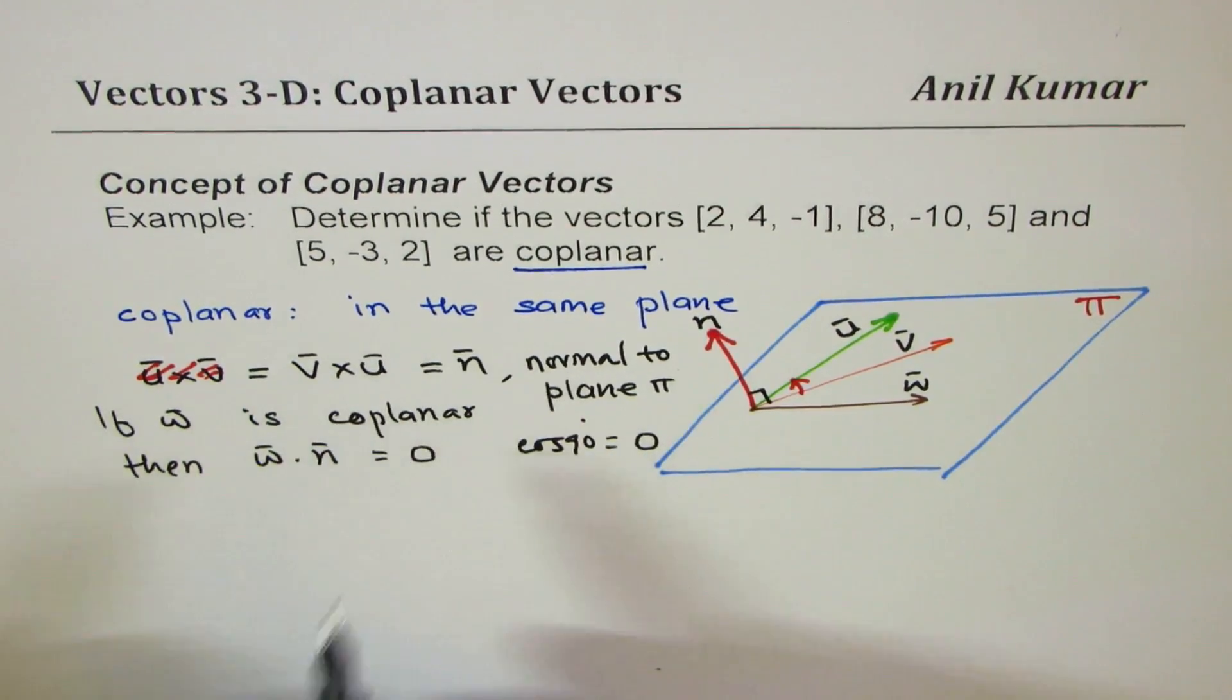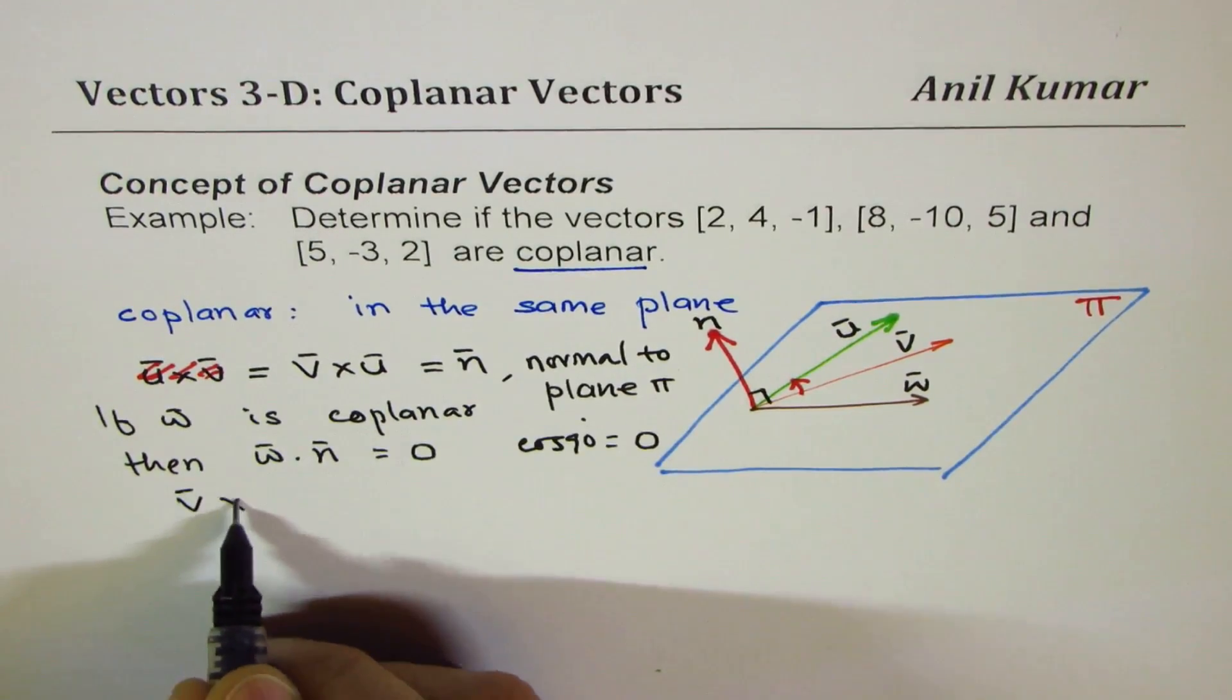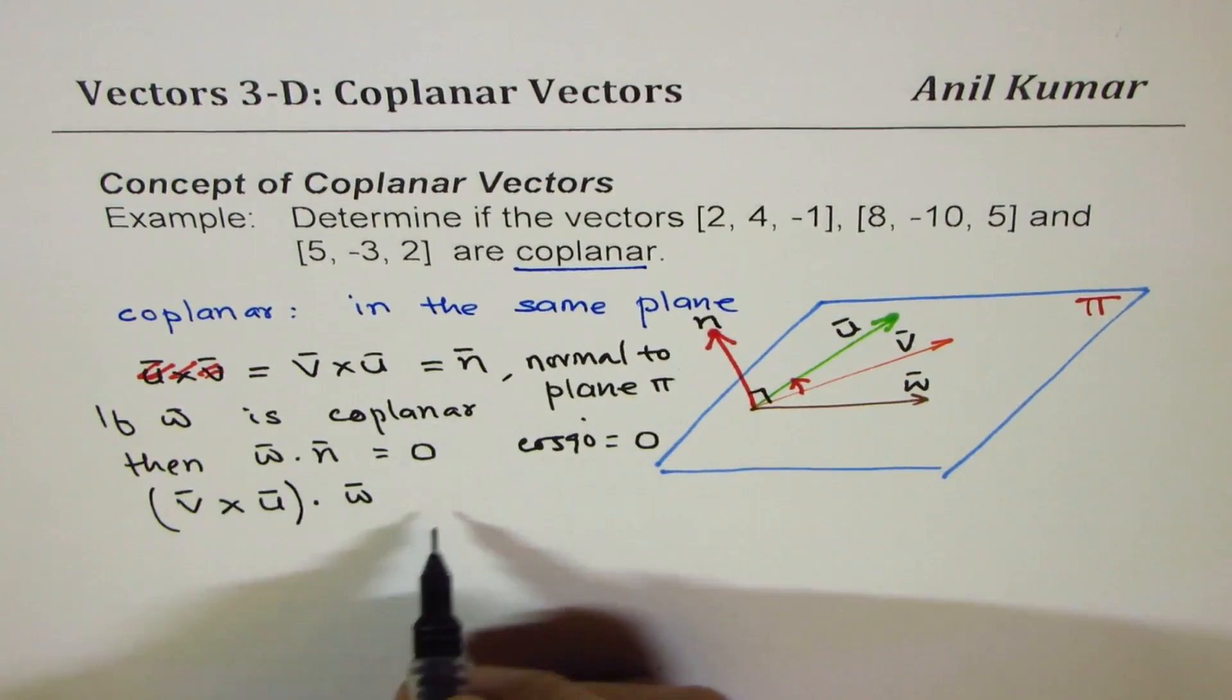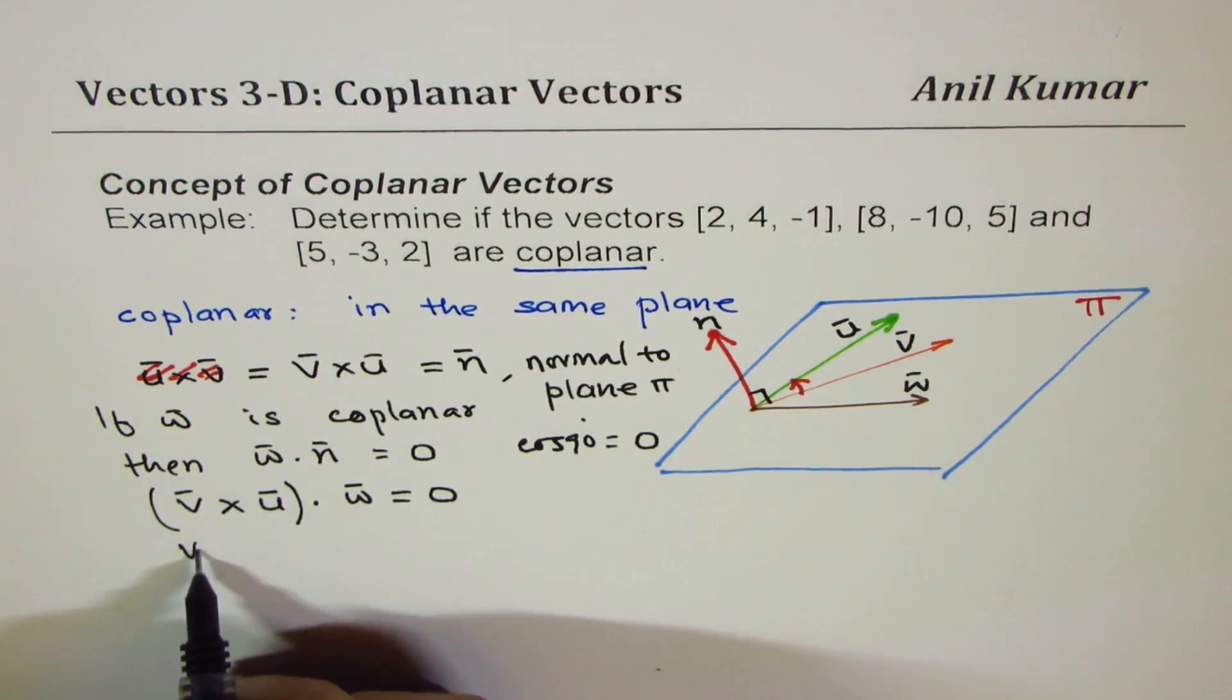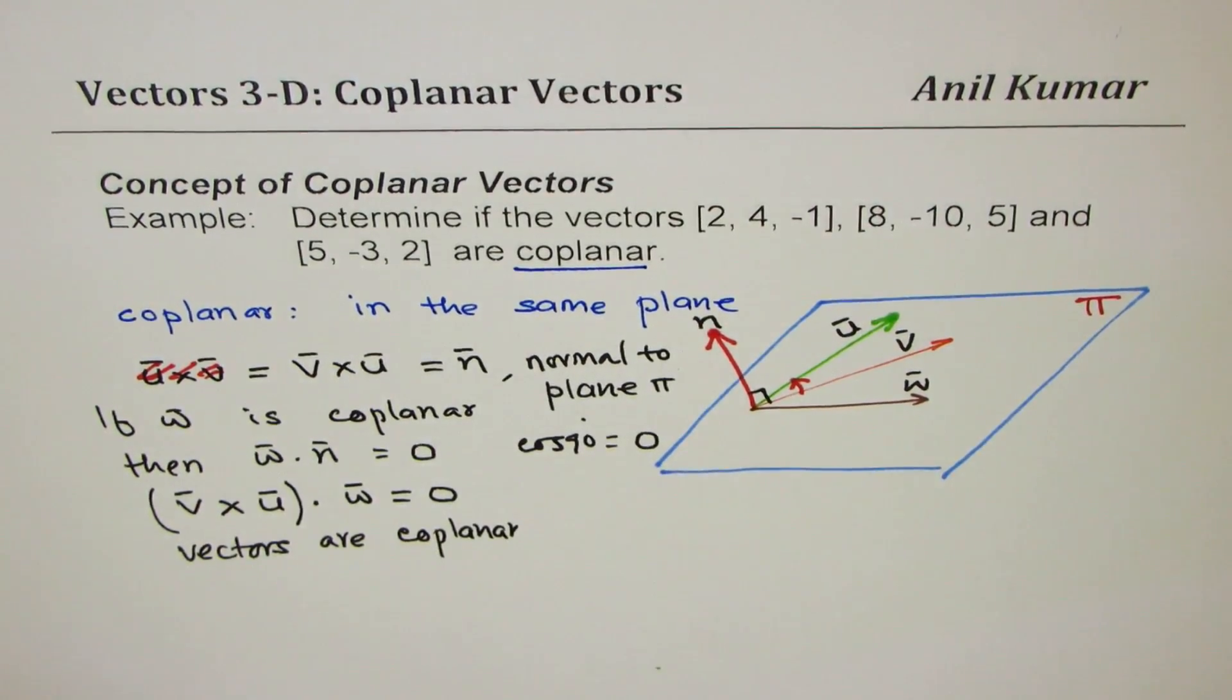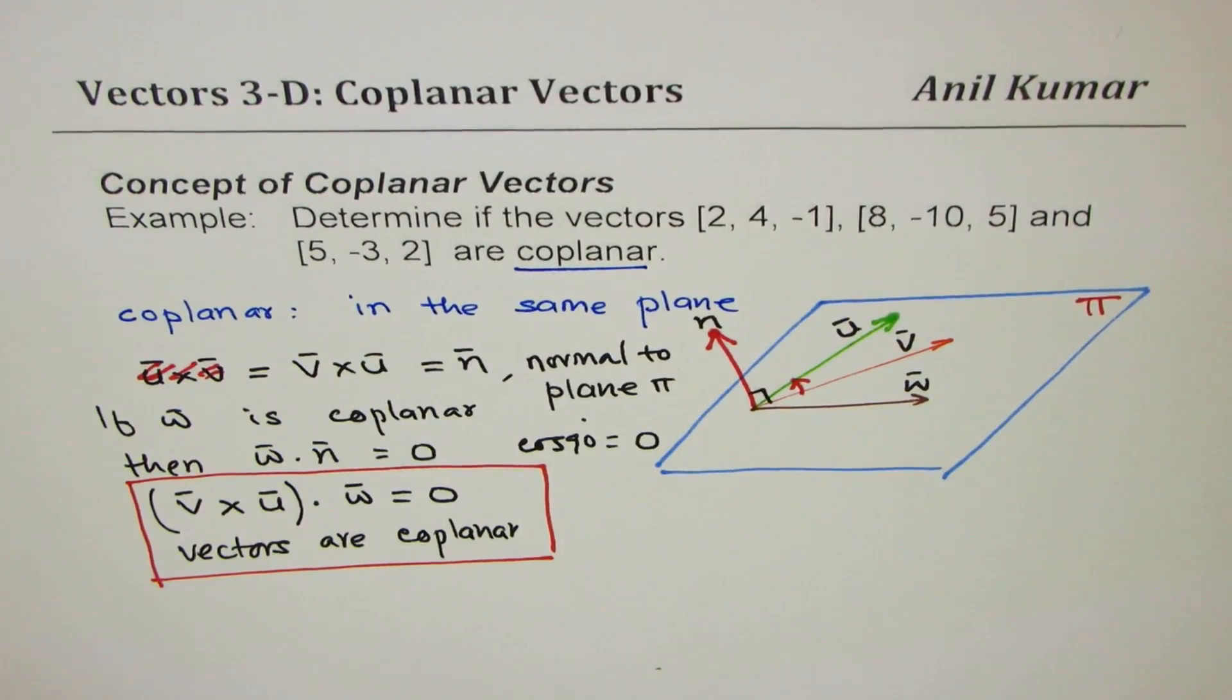We know cos 90 degrees is 0. So the dot product between w and n should be 0. What we did effectively is that we found scalar triple product. We basically found the cross product of v and u and then dot product with the third vector. And if that is equal to 0, then we say that the vectors are coplanar.